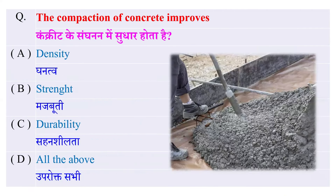The compaction of concrete improves — concrete के compaction से किस चीज में सुधार होता है? Options: density में, strength में, durability में, या इन सभी में — तो इसका जवाब है इन सभी में, यानि density में भी, strength में भी, और durability में भी सुधार होता है।